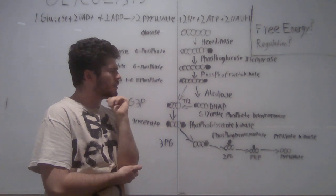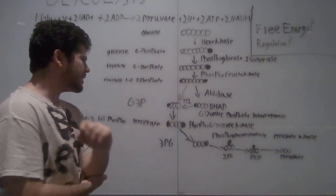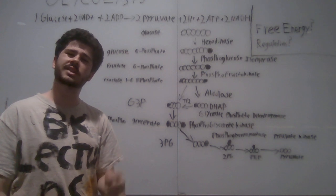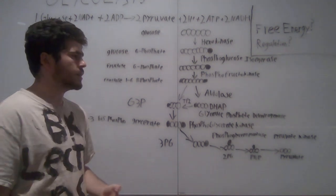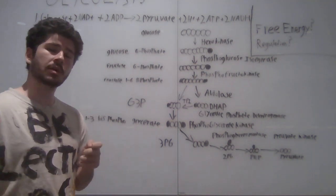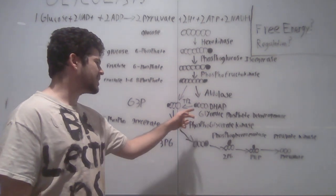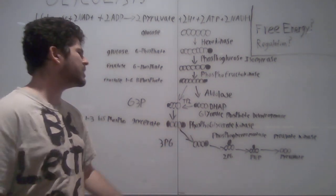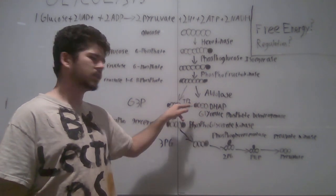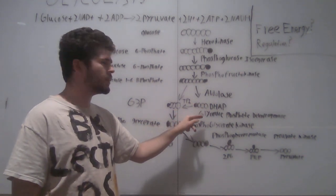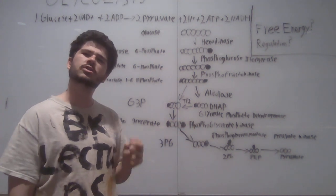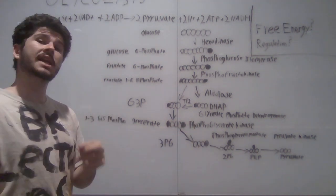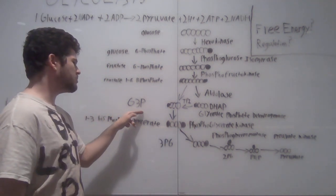However, the body can't use DHAP. It needs G3P to continue glycolysis. In order to fix this, the body uses TPI, triose-phosphate isomerase, meaning it's taking a triose, this three-carbon sugar here that has a phosphate on it, and turning it into an isomer of itself, namely G3P.